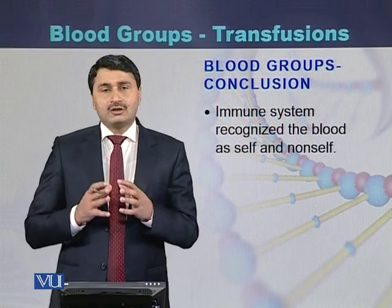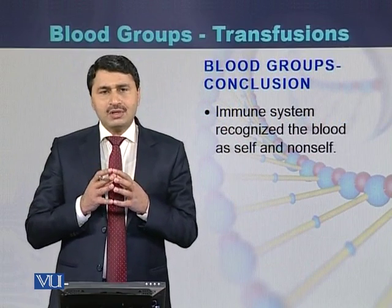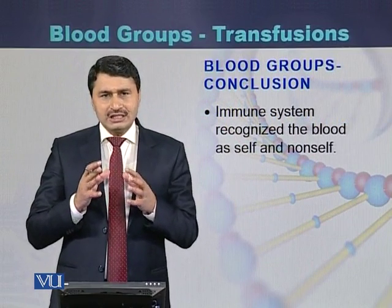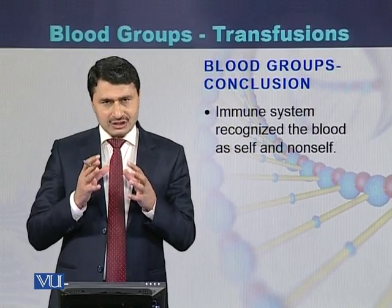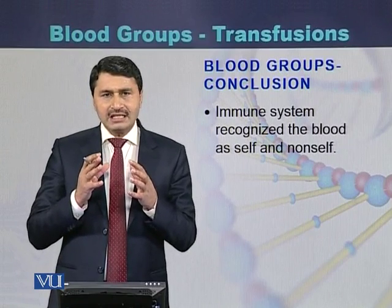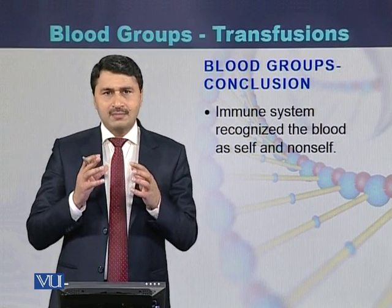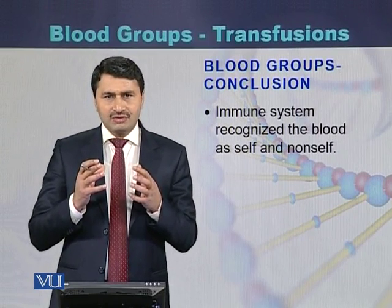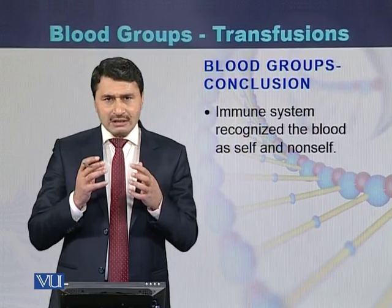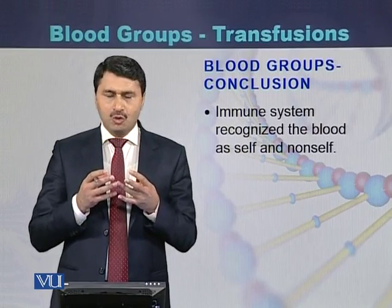In conclusion, blood groups in humans are controlled by a single gene that is triallelic in nature — it has three alleles. This gene can generate six different genotypes, and based on those genotypes there are four different blood groups: blood group A, blood group B, blood group AB, and blood group O.